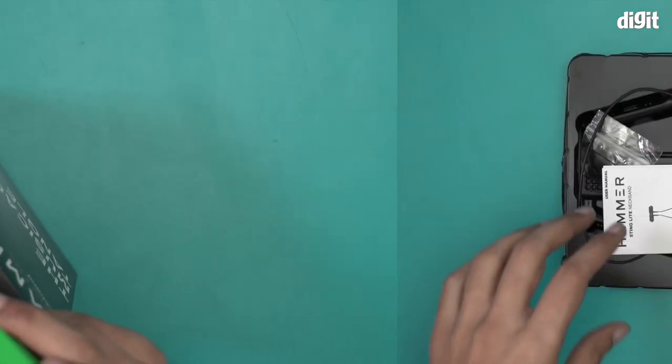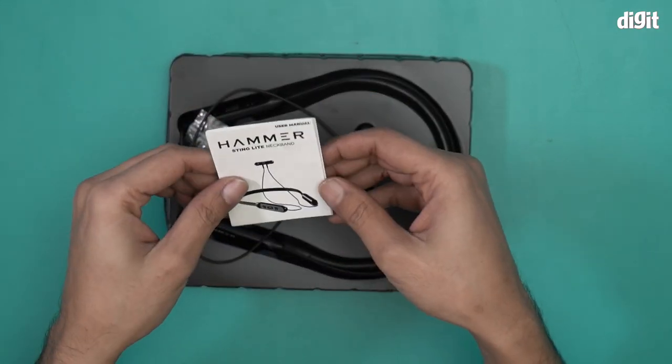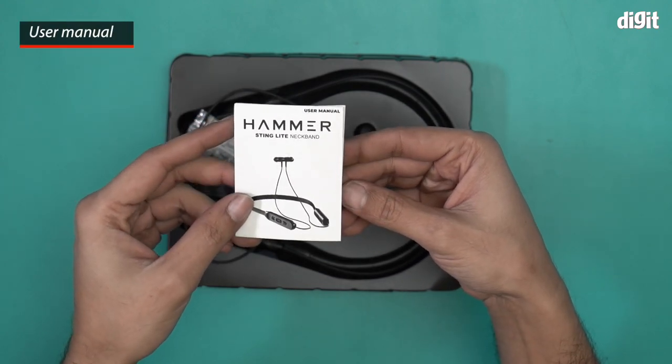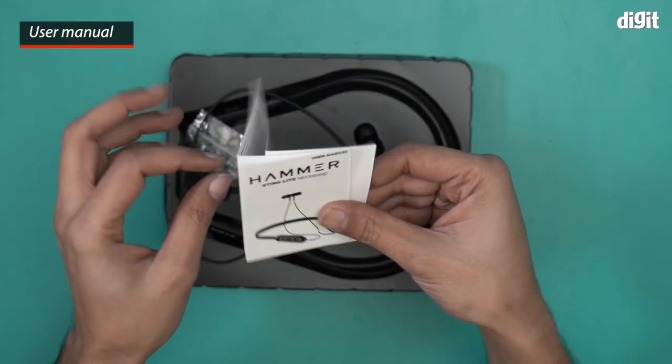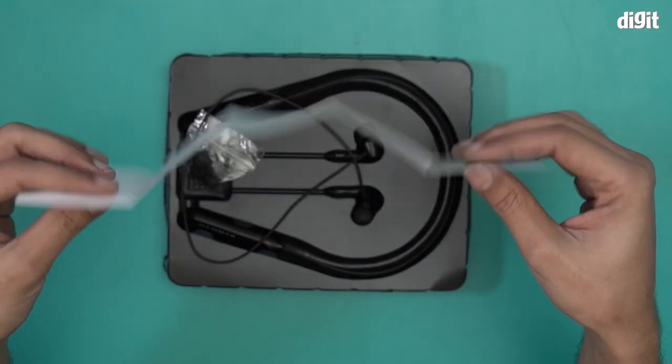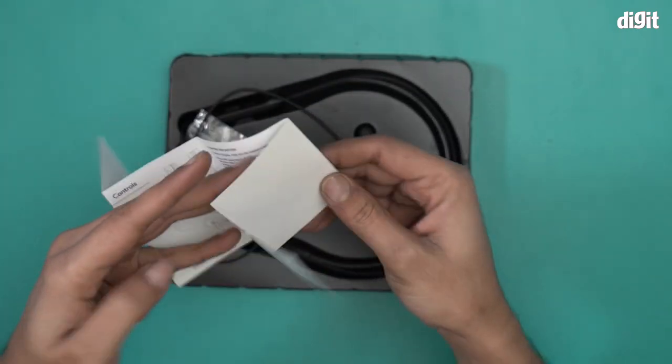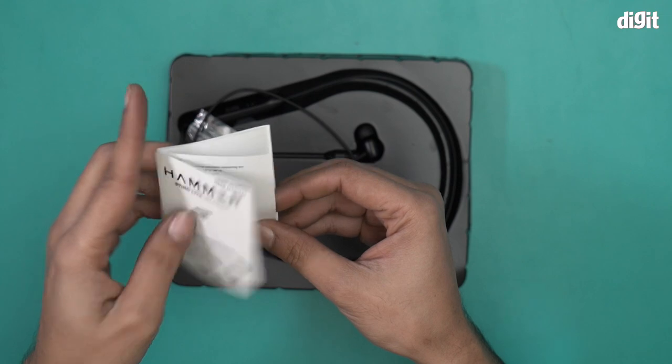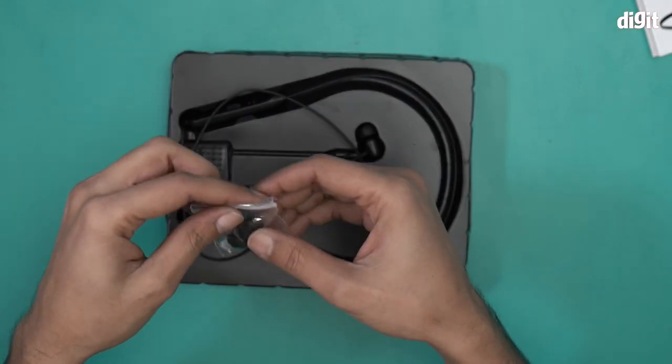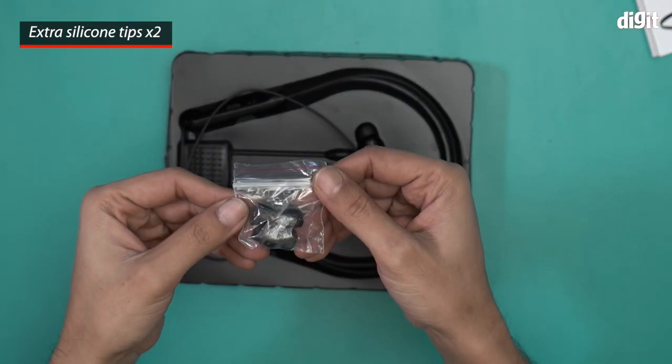So there you go, these are the components of the box. We have a user manual for the Hammer Sting Light neckband. Everything that you want to know - all the specifications, how to charge, how to set up, how to pair - everything is mentioned over here. We also have a packet with extra silicone tips.